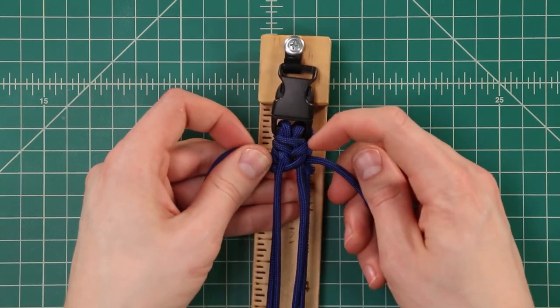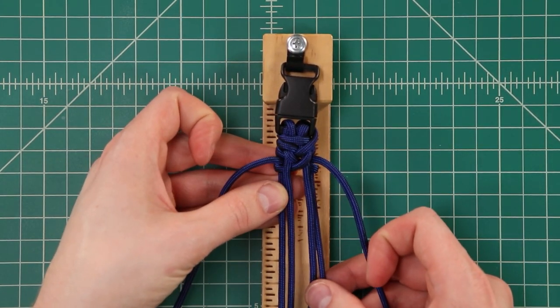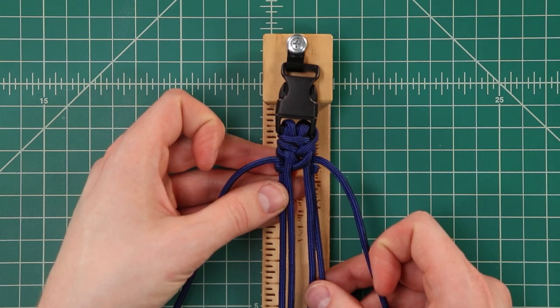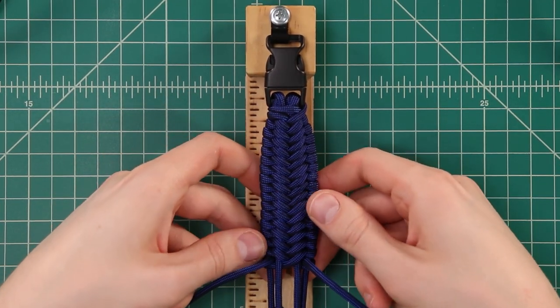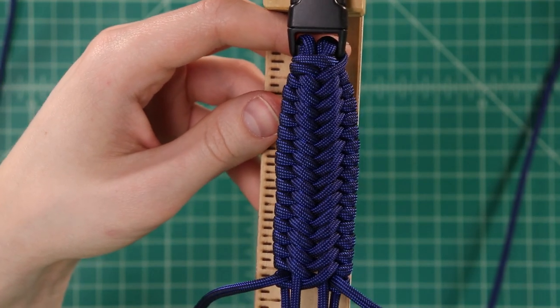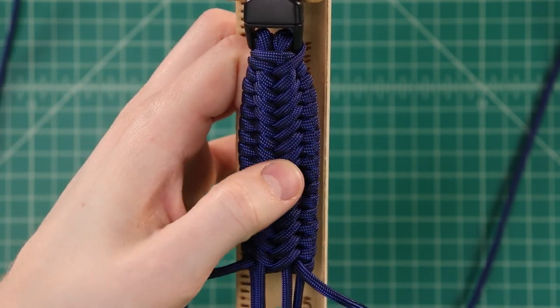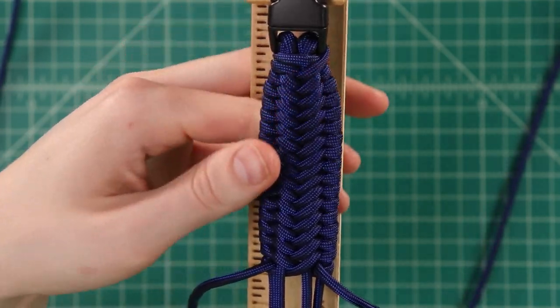Alright so you can kind of see the pattern. We're gonna go about halfway and we'll catch you then. Alright so we've made it halfway and you can kind of see that pattern that I was talking about where it has this M or W shape to it.